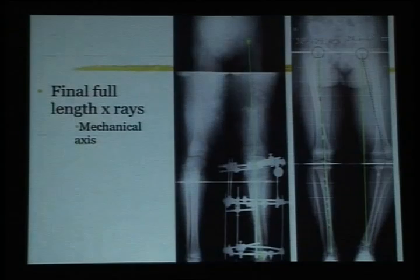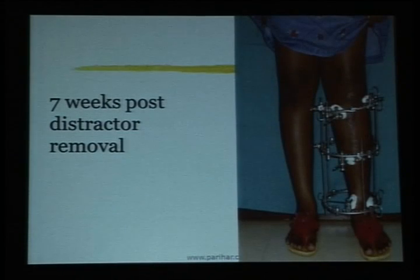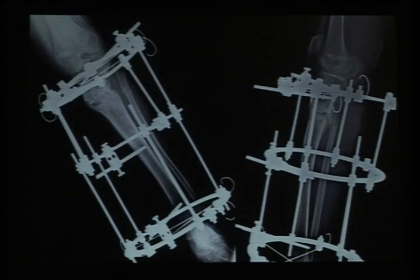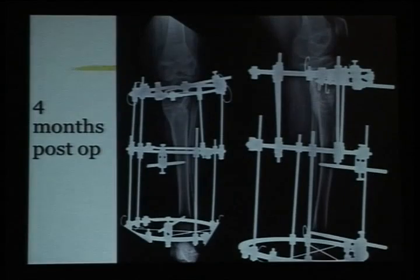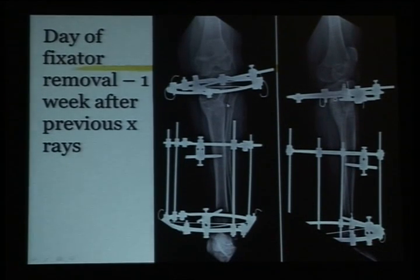This is the result with full correction and a full-length x-ray before and after. After the distractors were removed and the bone matured — 7 weeks after distractor removal — all that translation was hardly noticeable. Nature is throwing in new bone on that side, so the translation is already hidden, and this bump will go away with time.